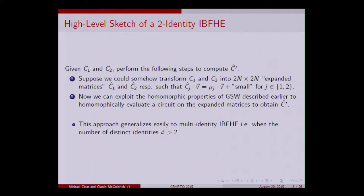The high-level sketch: we transform both input ciphertexts C1 and C2 into what we call expanded matrices, each of size 2n-by-2n. Then we use the additive and multiplicative homomorphic properties from GSW and evaluate a circuit gate by gate. We evaluate starting from the expanded ciphertexts rather than fresh ones as in standard GSW. The only performance difference is that we're dealing with larger matrices.